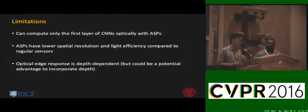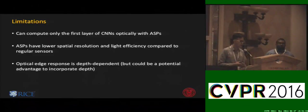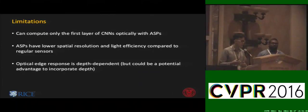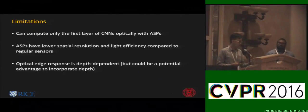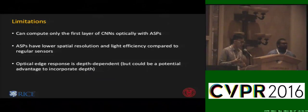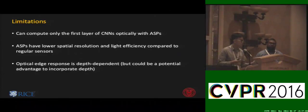Our proposed system has some limitations. First, ASPs can only compute the first layers of a CNN optically — computing subsequent layers optically would require different technologies. Additionally, ASP sensors have reduced spatial resolution and light efficiency, largely due to the two layers of metal gratings on top of the photodiode. Finally, the optical edge response is depth-dependent, requiring scenes to be slightly out of focus — though this could potentially be an advantage for incorporating depth information from the ASP.